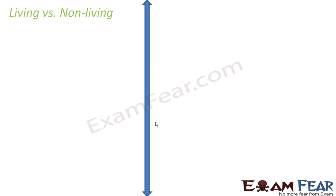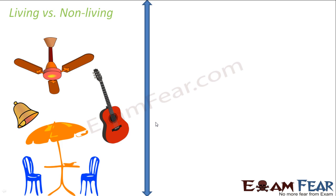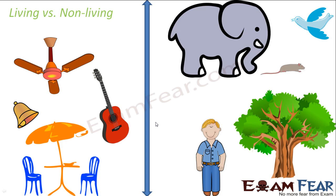For example, when we are asleep, do we move? No — but does that mean we are non-living? No, we are still living. So movement is not the only criteria. When I say non-living, things that come to mind are chairs, tables, a guitar, fan, pen, pencil, paper — all of these are non-living.